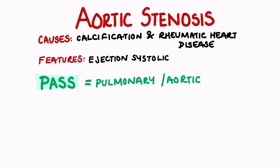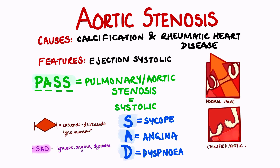Aortic stenosis is an ejection systolic murmur, as opposed to any other type of systolic murmur, because the aorta is the main vessel directly pumping and ejecting blood to the rest of the body. We can use the mnemonic PASS to remember this, which stands for Pulmonary/Aortic Stenosis equals Systolic. This murmur has a crescendo-decrescendo sound, meaning it gradually increases and then decreases in volume, creating a diamond shape on a phonogram.